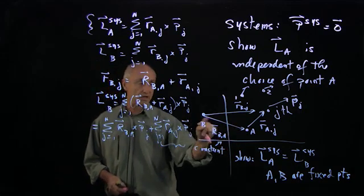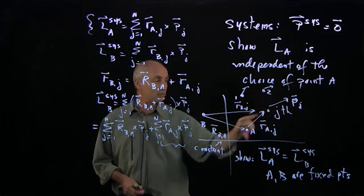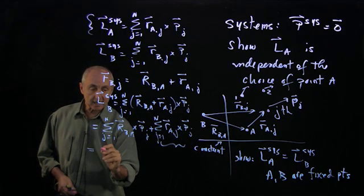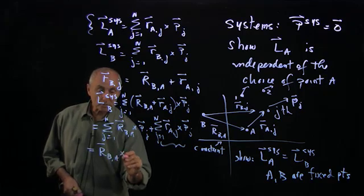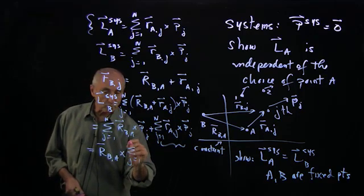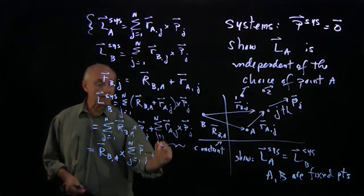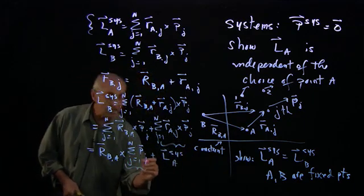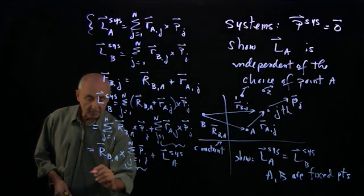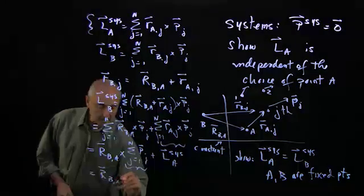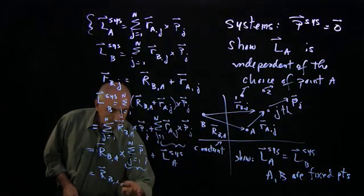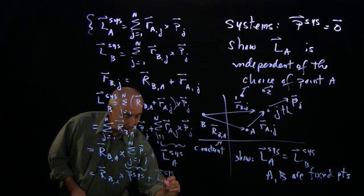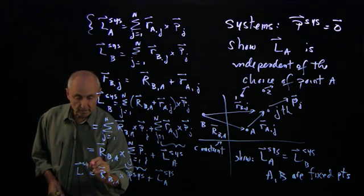R_BA is a constant vector — no matter which particle we choose, the 1st, 2nd, or j-th particle, this vector is always the same. So I can pull it out of the sum, giving R_BA cross the sum over j from 1 to N of p_J. This sum is just the total momentum of the system. So we have L_B equals R_BA cross p_system plus L_A.